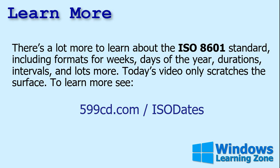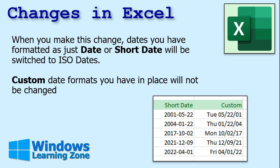Today's video is only scratching the surface with dates and times. If you want to learn more about the ISO standard as it applies to days of the year, weeks of the year (1 through 52), durations, time intervals, and more, I'll put links to some valuable resources in the description. Now, how does this stuff affect Excel and Access? When you make this change, the dates already in your spreadsheet that are formatted as standard or short dates will be switched to the ISO dates.